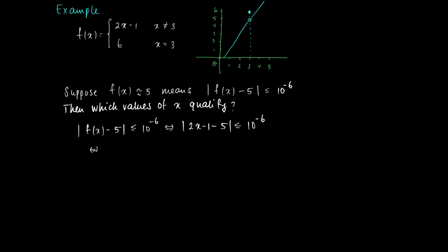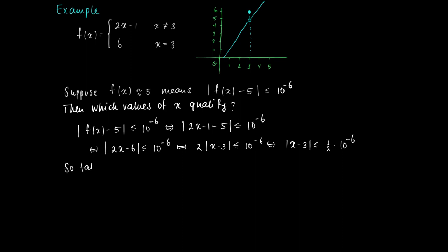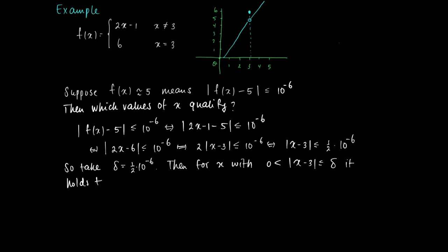This can be done along the same lines. We get |2x − 6| ≤ 10^{−6}, so 2·|x − 3| ≤ 10^{−6}, which is equivalent to |x − 3| ≤ (1/2)·10^{−6}. So the distance between x and 3 can be as much as (1/2)·10^{−6}, and we can take delta = (1/2)·10^{−6}. Then for x's satisfying 0 < |x − 3| ≤ delta (meaning x is not equal to 3), we find that |f(x) − 5| ≤ 10^{−6}.